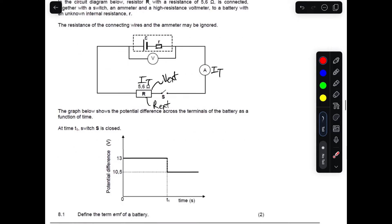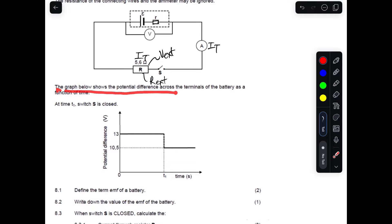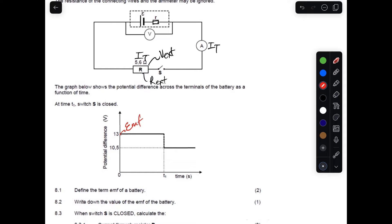Now let's look at the graph. It says the graph below shows the potential difference across the terminals of the battery as a function of time. We have a graph showing potential difference versus time. The highest value on the graph is the EMF — so 13 is the EMF. The lowest value is V external, which is 10.5.